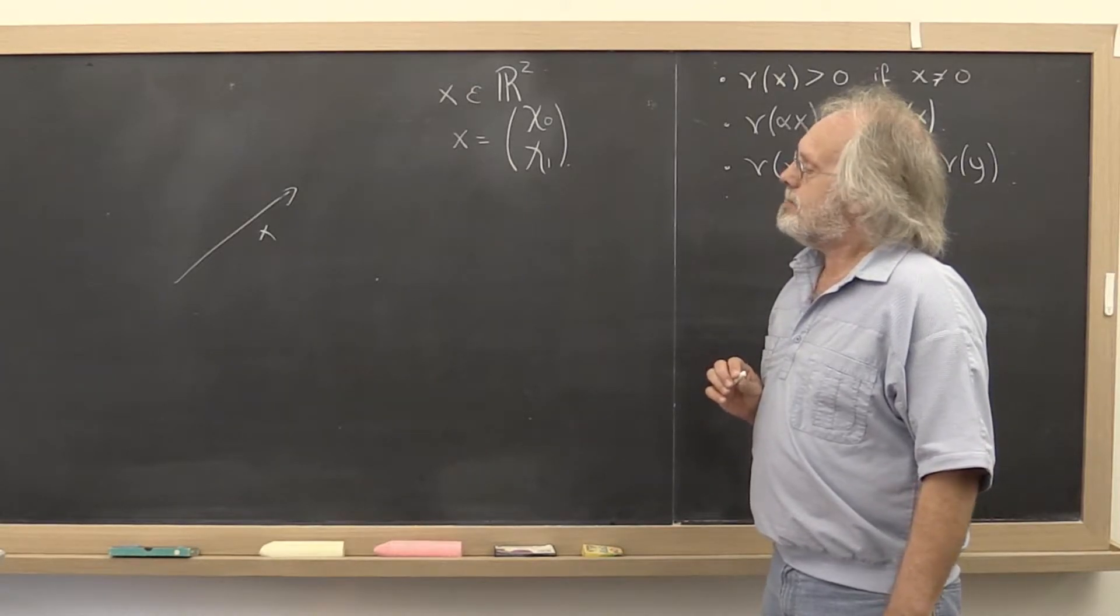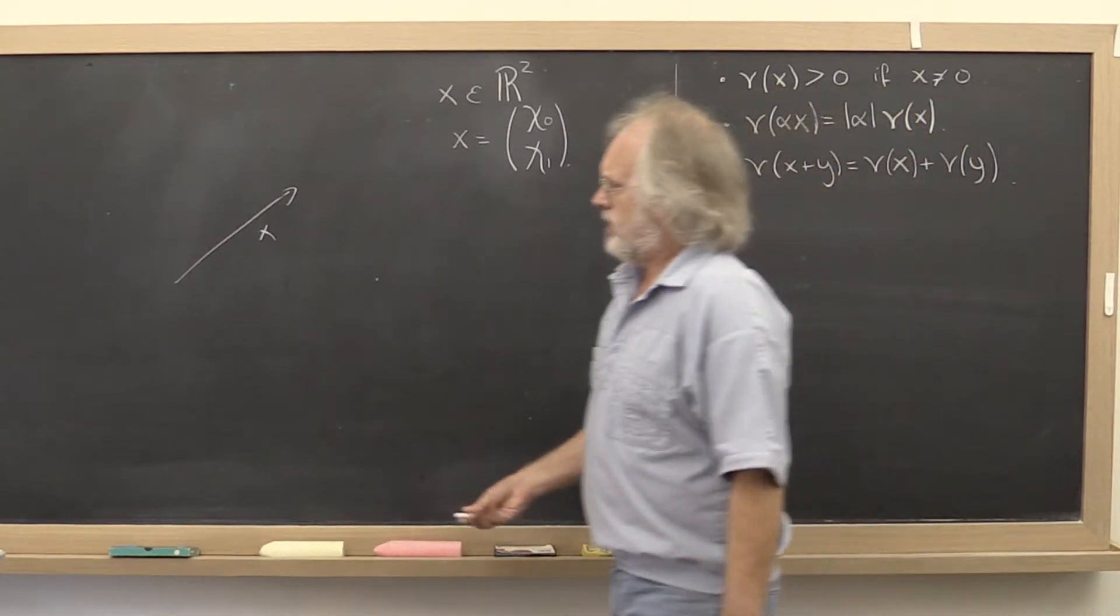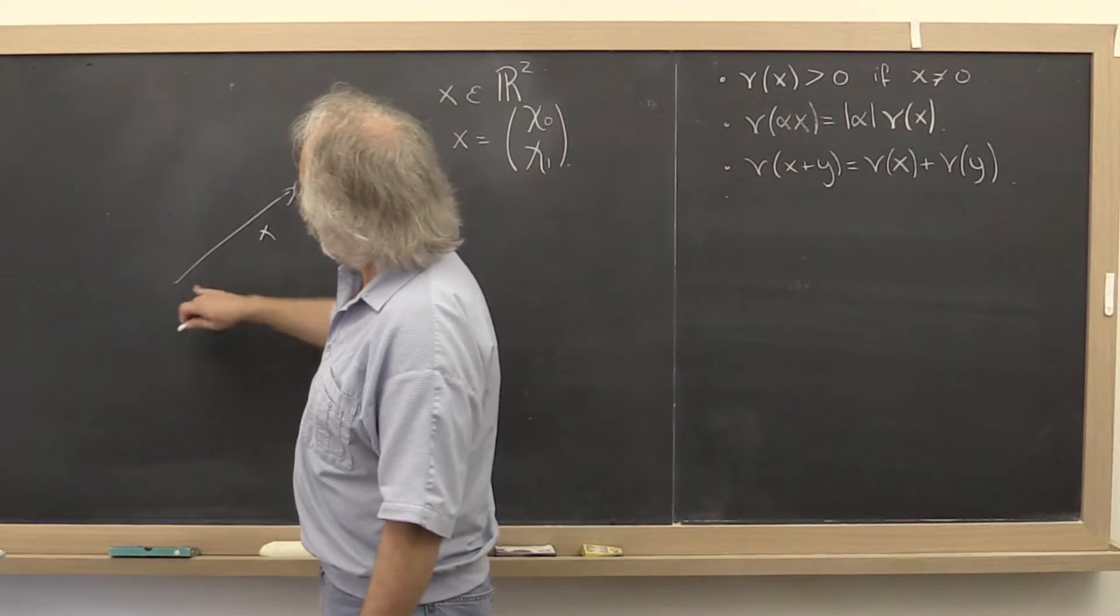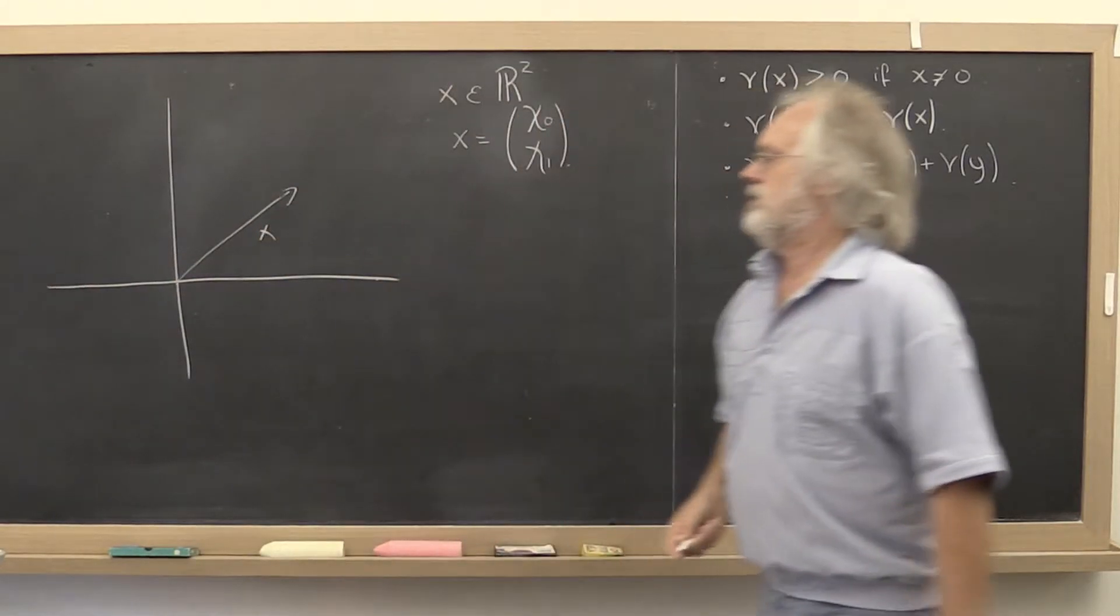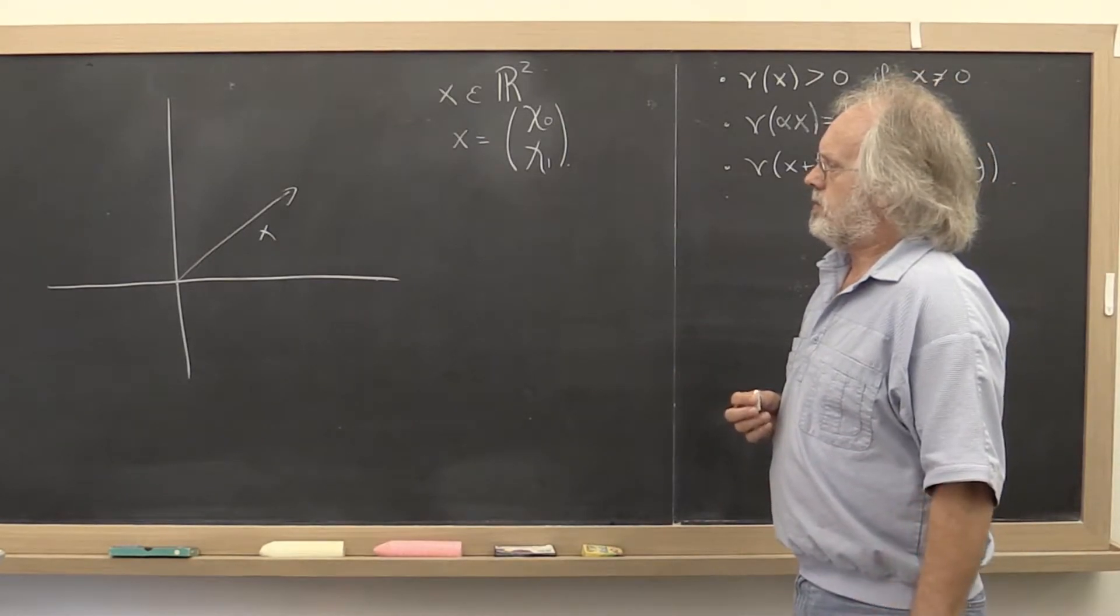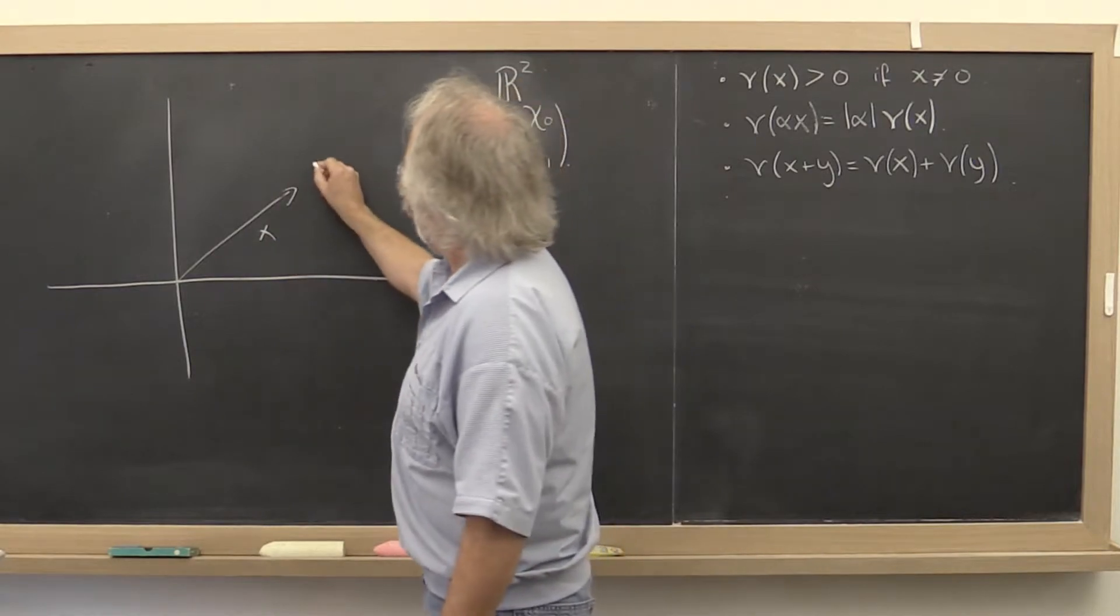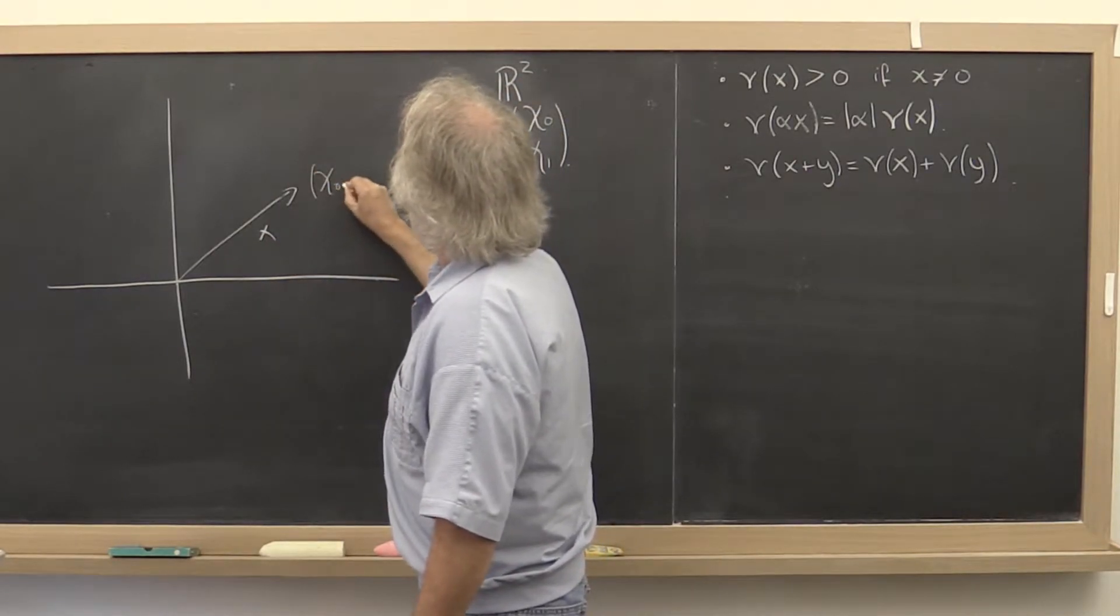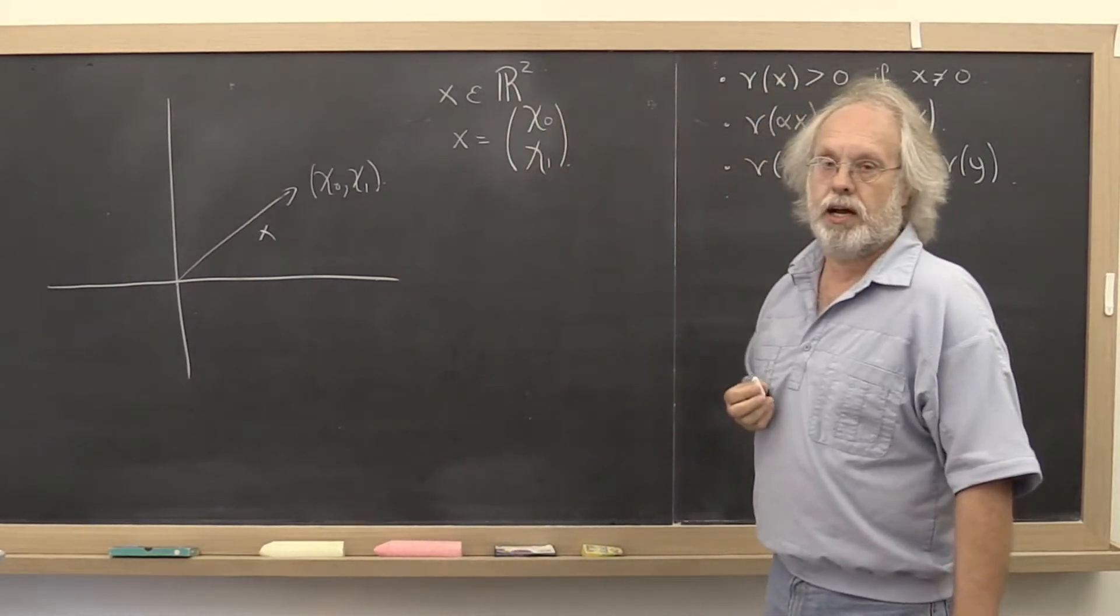The way we can visualize this vector in two dimensions is to say, well, let's root it at the origin of our coordinate system. And then we can think of this vector as pointing to the point χ₀, χ₁.